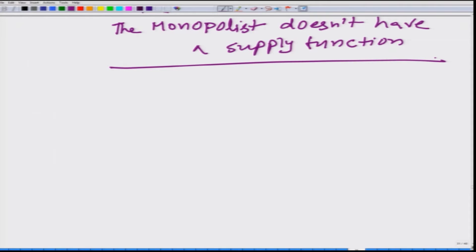What does it mean that the monopolist does not have a supply function? Remember how we obtain the supply function for a firm operating in the perfectly competitive market. What we did? The firm did the profit maximization, it took price as given, and it obtained the quantity that it would produce as a function of price.